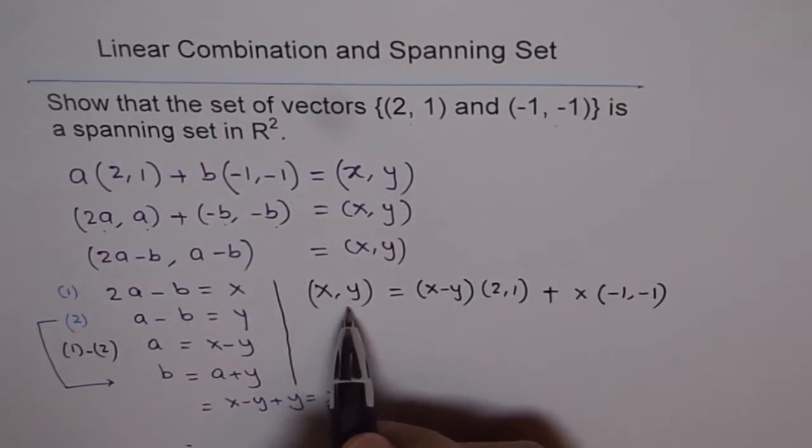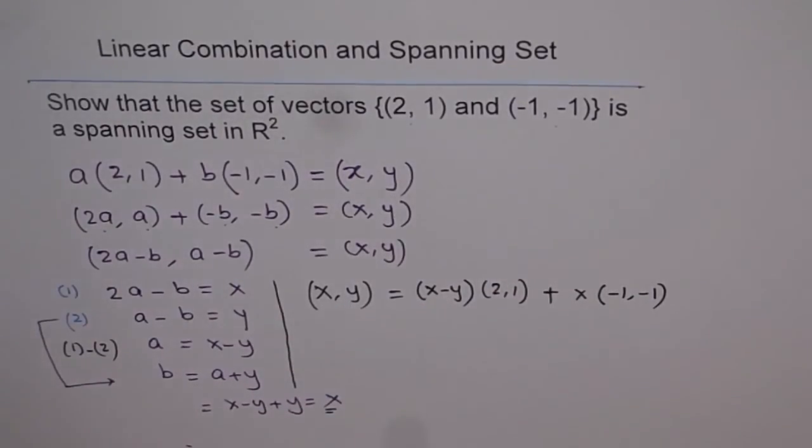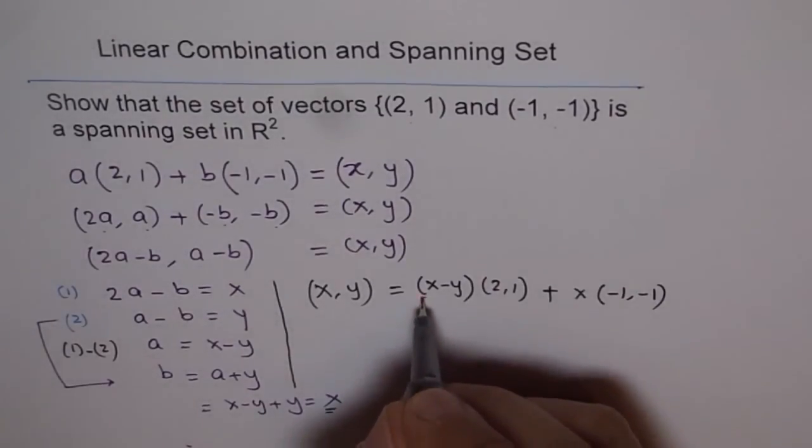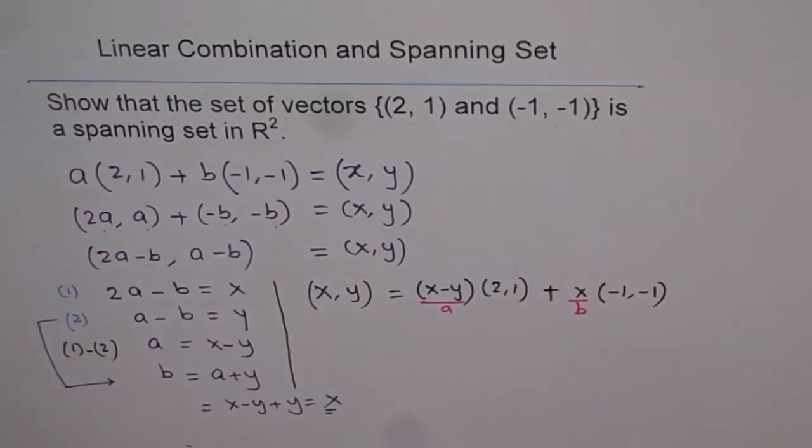(x, y) is known to us, and therefore, these 2 terms, the scalar multiples, are also known to us. This was our a, and this was b.